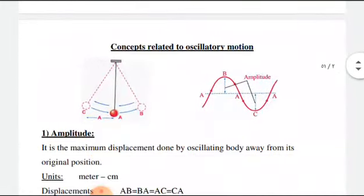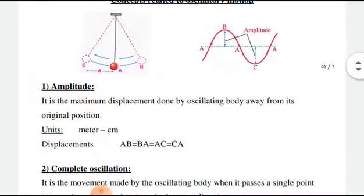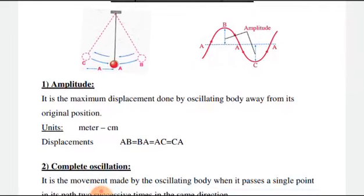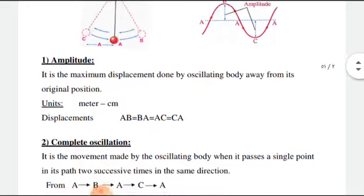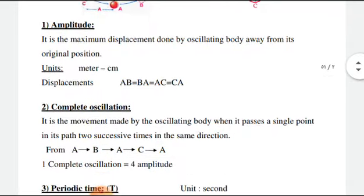There are some concepts related to oscillatory motion. Firstly, the amplitude. What is the amplitude? It is the maximum displacement done by the oscillatory body away from its original point. And its measuring unit is meter or centimeter.